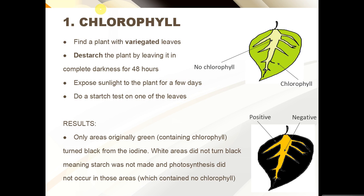Let's begin with chlorophyll. To test for the necessity of chlorophyll in photosynthesis, you need to find a plant with variegated leaves — meaning some parts of the leaf have various colors. Looking at the example shown, the outer parts of the leaf are green, containing chlorophyll, while the inner areas near the veins are pale, meaning they do not contain chlorophyll.